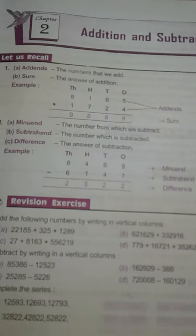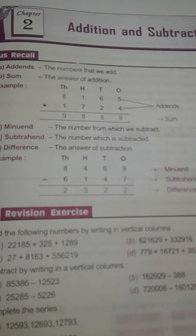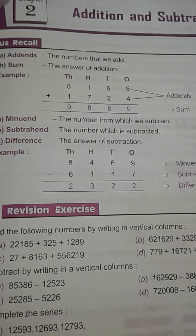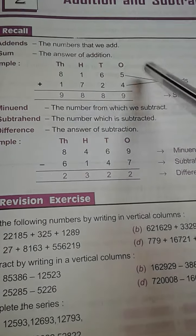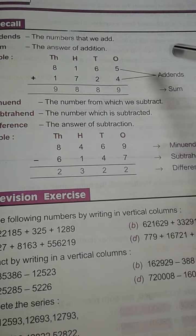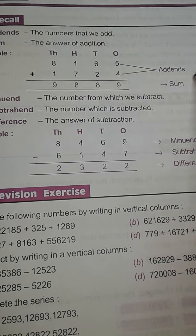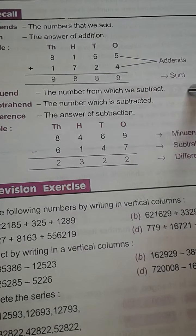This is your second chapter, addition and subtraction. In addition, we use addends and sum. The two numbers which are used to add are known as addends. And this one is the sum. The answer of the addition is known as sum.